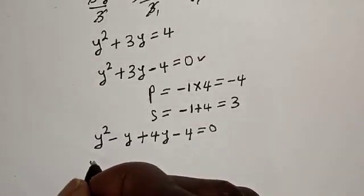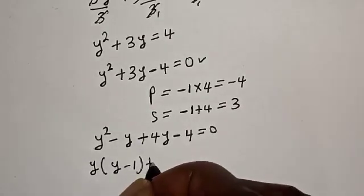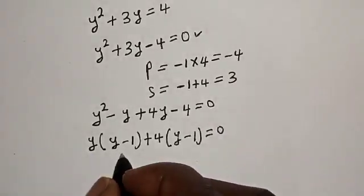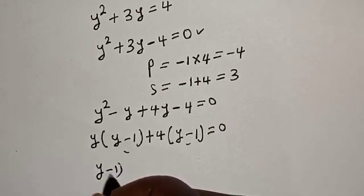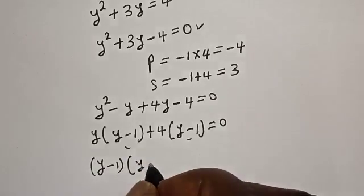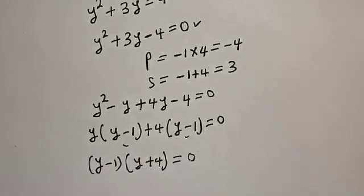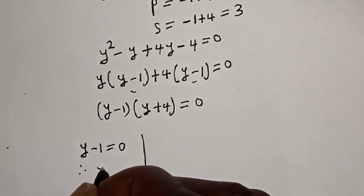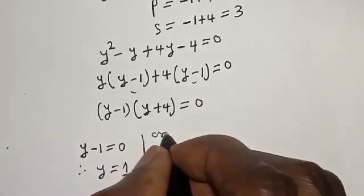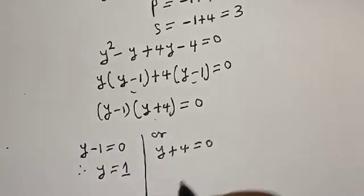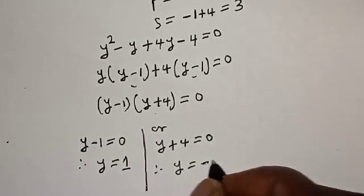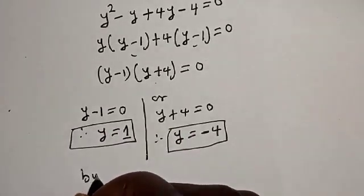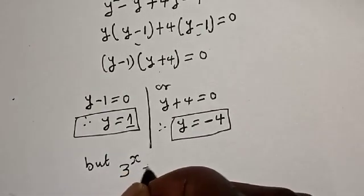Factoring gives y bracket y minus 1, plus 4 bracket y minus 1, equals 0. Since y minus 1 is common, we have y minus 1 times y plus 4 equals 0. Therefore y equals 1, or y plus 4 equals 0, giving y equals minus 4.